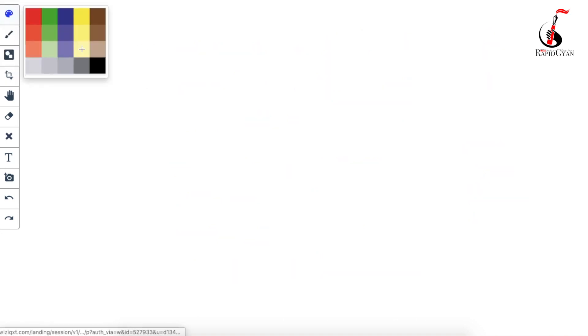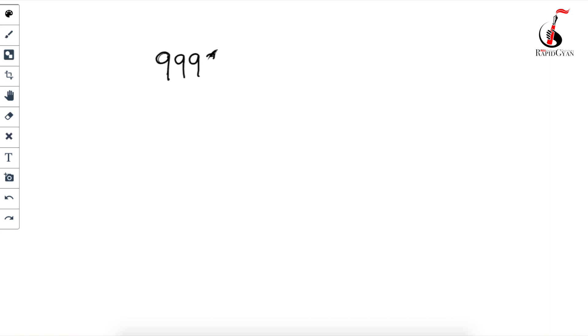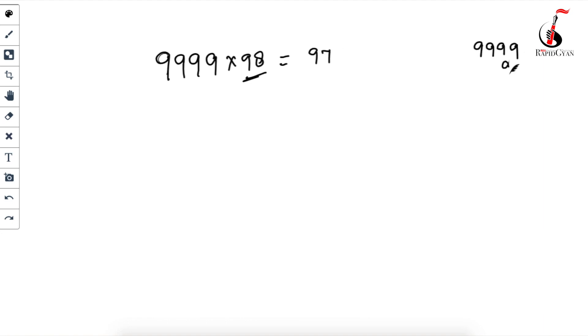Now with 9999. Take 9999 × 98. One less than 98 is 97. Subtract 97 from 9999: 9 − 0 = 9, 9 − 0 = 9, 9 − 7 = 2, — wait — 9 − 9 = 0. So you get 9902. That's your answer!